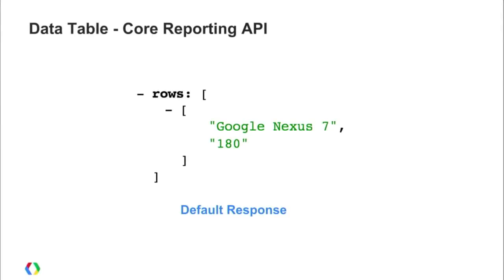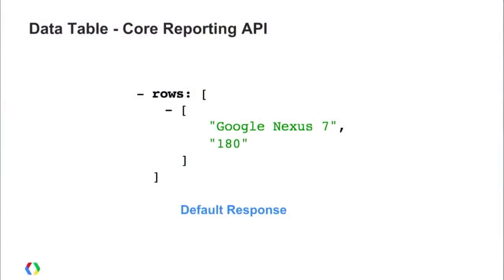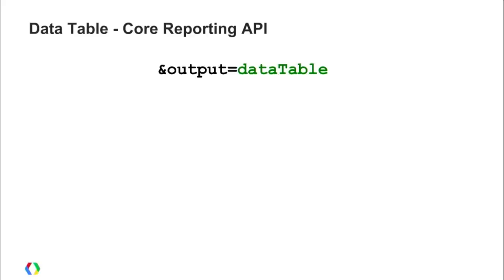We've also added a data table response format to the Core Reporting API. Normally, the response has column headers and a rows object containing data ordered by dimensions followed by metrics. However, many people want to use this data with visualizations, particularly Google Charts, which uses the data table format extensively. So we've added a new capability: you can now specify an 'output' query parameter in your Core Reporting API request and set it to 'data table' to get the response in that format.